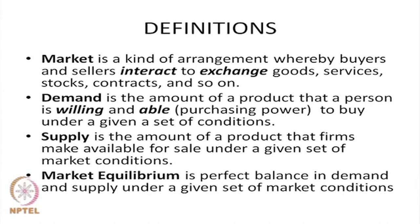Supply, on the other hand, is the quantity of a product or service that firms make available to the market for sale under a given set of market conditions — basically the amount of goods or service that the sellers in a market supply. When there is a perfect balance of demand and supply in a market, we say that the market is in equilibrium — demand equals supply, with no excess supply and no scarcity of supply.